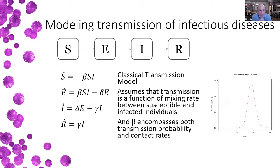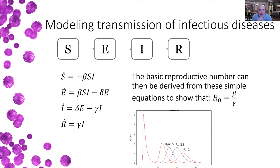The classical transmission model is an SEIR-type model where you produce these nice SEIR-type curves. The simple math for an SEIR model has beta — the transmission rate — which assumes that transmission is a function of mixing between susceptible and infected individuals. Beta encompasses both the transmission probability and the contact rates, and from that you can generate simple statistics like the basic reproductive number, which is just beta over gamma — the rate of transmission over the rate of recovery.